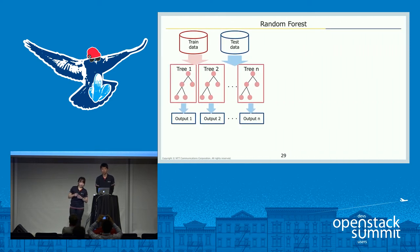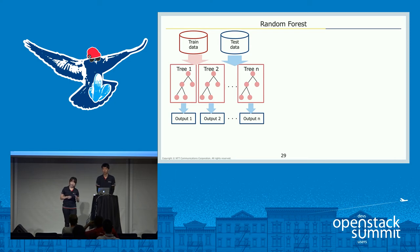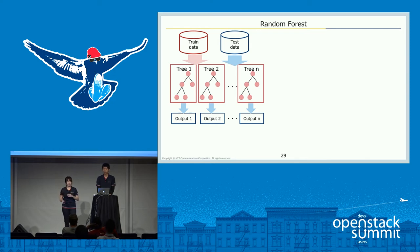As a classification method, we use random forest, which is one of the major classification methods. Random forest is composed of multiple decision trees, and each branch point has a conditional expression — in this case, a frequency threshold. In the training phase, each decision tree is constructed using a random subset of training data. In the test phase, each decision tree outputs an estimated label, and finally the most common result is output as the estimated error.